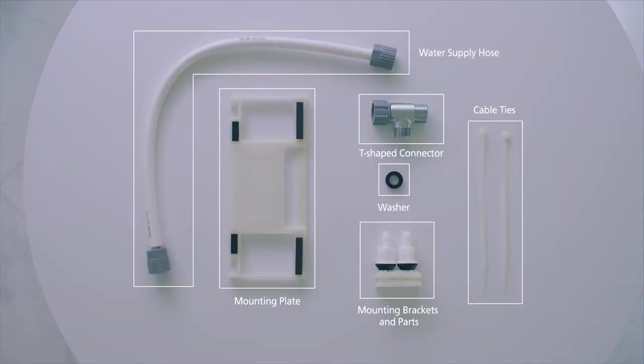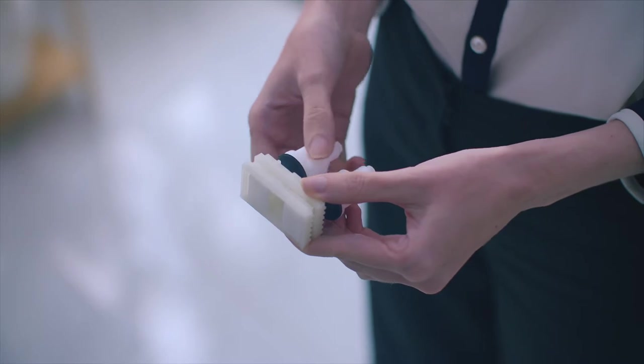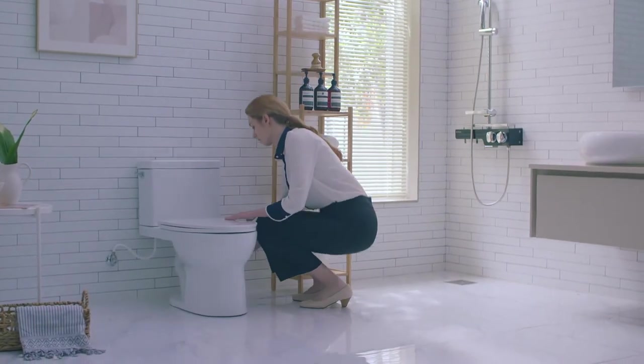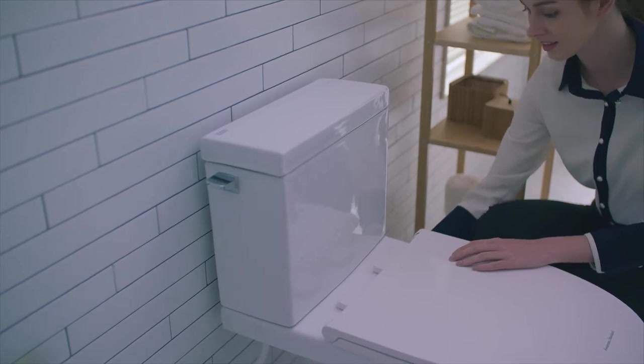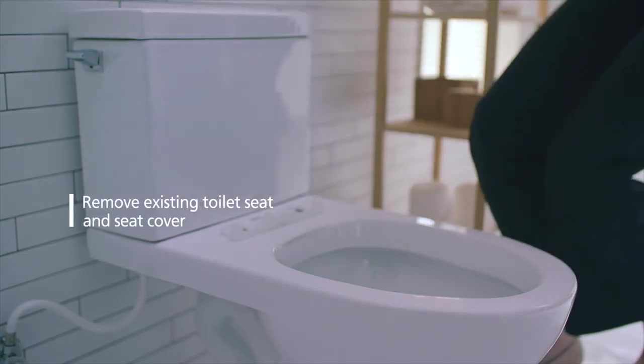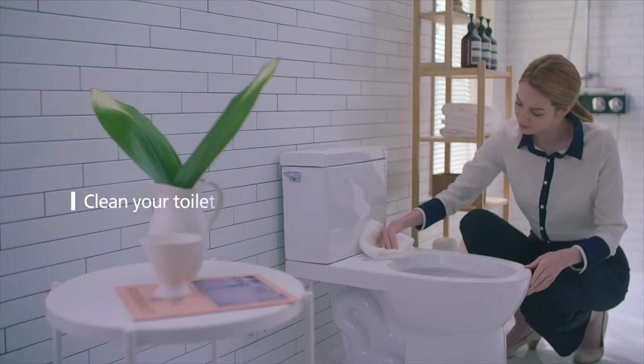Among the parts, disassemble the mounting brackets and mounting bolts. Loosen the fixing nut of the existing toilet seat under toilet. Remove the existing toilet seat and cover and store them. Thoroughly clean your toilet, especially mounting holes.